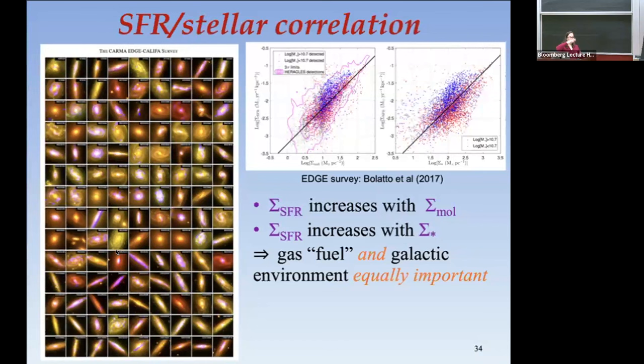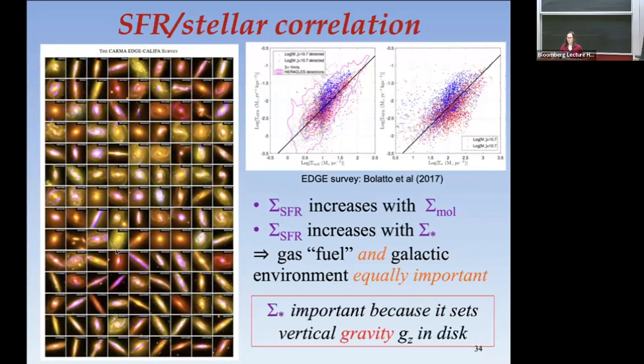The gravitational potential from stars is equally important in setting the star formation rate, because you could have that amount of gas distributed over a large volume at low density or small volume at high density, and that depends on the gravitational field. So both the fuel and the environment — the gravitational potential from stars — matter equally.